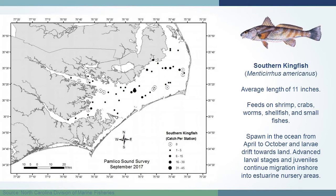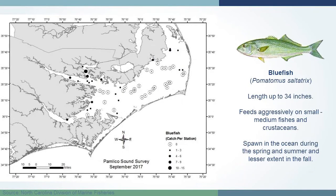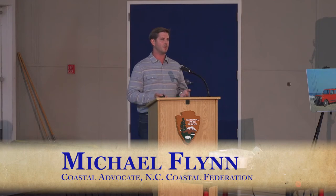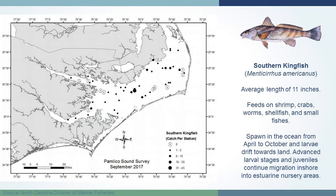Moving up the food web, southern kingfish is more predatory but mostly bottom-feeding, working on worms, crabs, and shellfish. Bluefish — a species many people like to target — showed an interesting result in sampling data: only about 10 to 15 were captured per trawl. A gentleman from the Division of Marine Fisheries explained the bluefish may actually be evading the trawl. It's not that the population is low — other species are bottom feeders susceptible to being caught, whereas bluefish may not be.